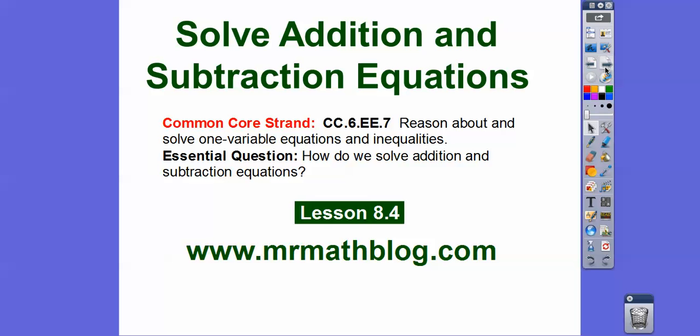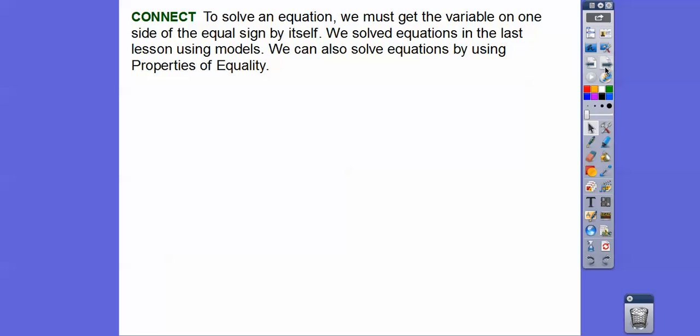There's our Common Core strand, and our question here is: how do we solve addition and subtraction equations? To solve an equation, we must get the variable on one side of the equal sign by itself. I typically like to get it on the left, but you can get the variable on the right if you want to. We're going to get it on the left in this lesson - that's what I do most of the time.